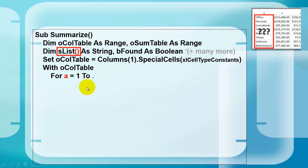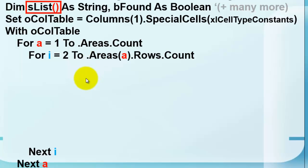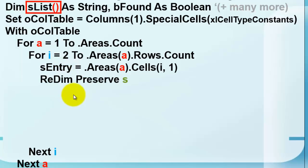We set O column table again to the first column to all the constants. With O column table, we are going to loop through all the areas in that left section. We loop in each area through the number of rows it has. We find what in the first column the entry is. Office, office, personnel, etc.